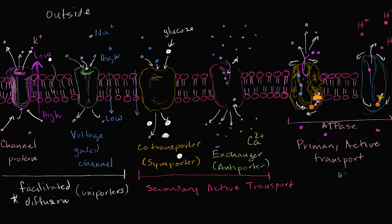Let's talk about primary active transport. The best example of this in animal cells is the sodium-potassium pump. The sodium-potassium pump is super important for establishing resting membrane potential, but the concentration gradients it establishes are also very important. It pumps sodium ions out of the cell against their concentration gradient. So even though sodium already has a higher concentration outside, it keeps pumping them out. To do that, it needs to use ATP — it breaks up ATP into ADP and a phosphate group, it hydrolyzes it, which is why it's sometimes called an ATPase. It uses that energy to pump sodium out of the cell and potassium into the cell.